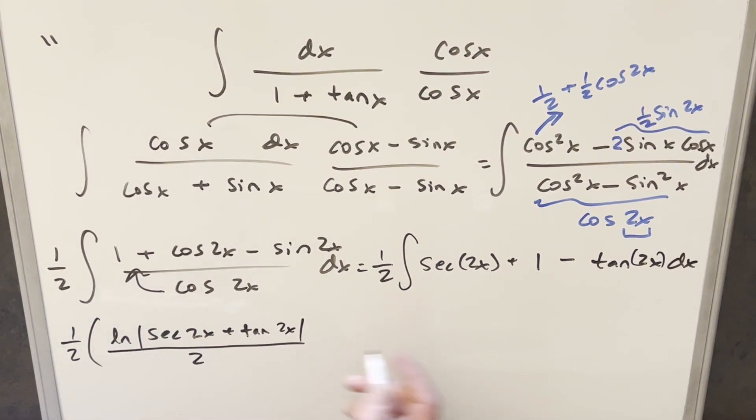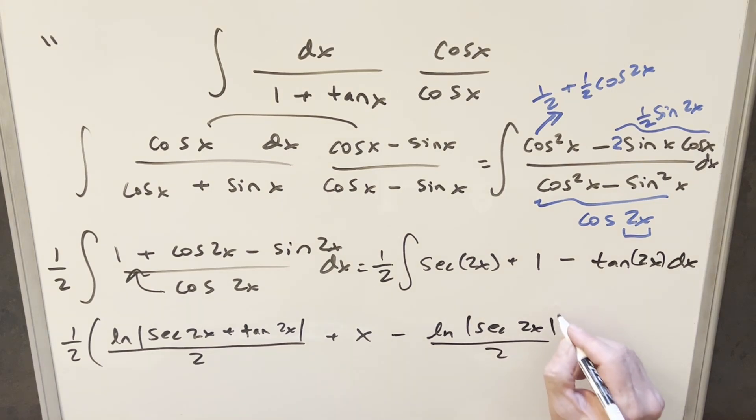Here, this is just going to become a plus x. And then here for this, we can write this as minus natural log secant 2x. And again, bring the 2 into the denominator. Parentheses, add a plus c, and that's it.